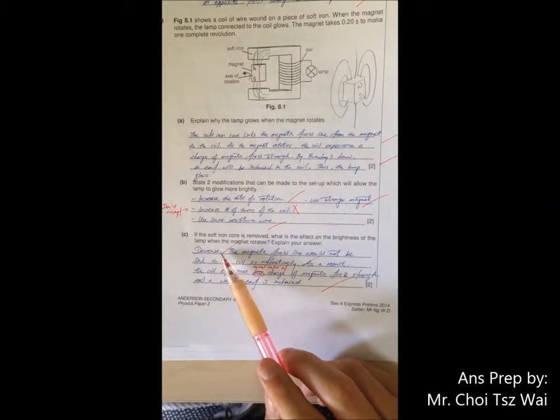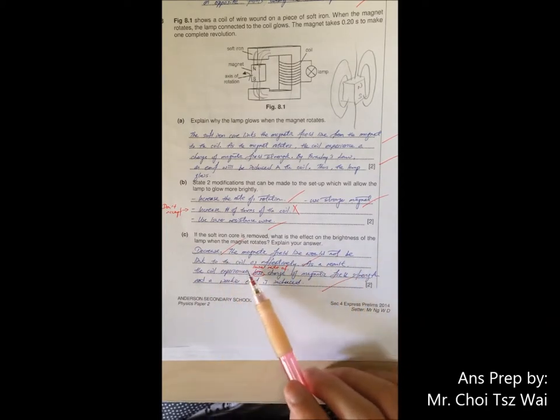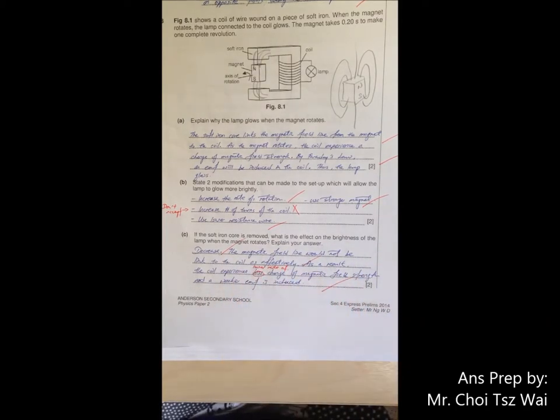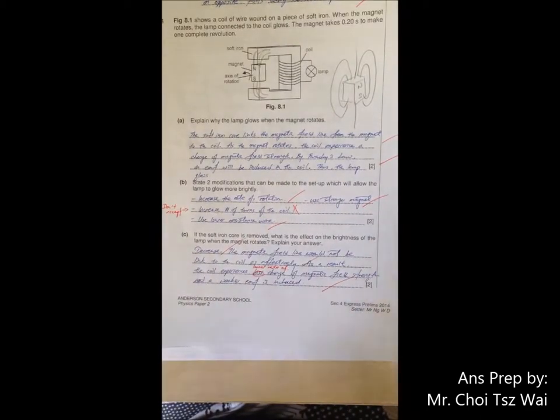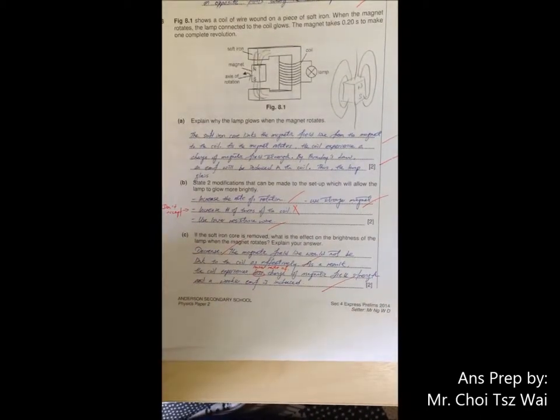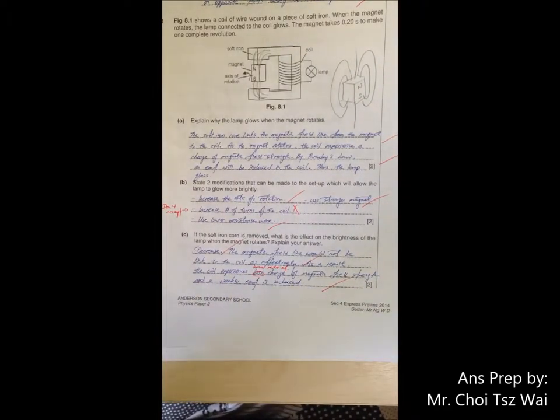So that's why without the iron core, the brightness will be decreased. And that is because the magnetic field lines would not be linked to the coil as effectively as before. As a result, the coil experiences a lower rate of change of magnetic field strength. So it's not less change, it's a lower rate of change. And therefore a weaker EMF is induced. And therefore your brightness would decrease.